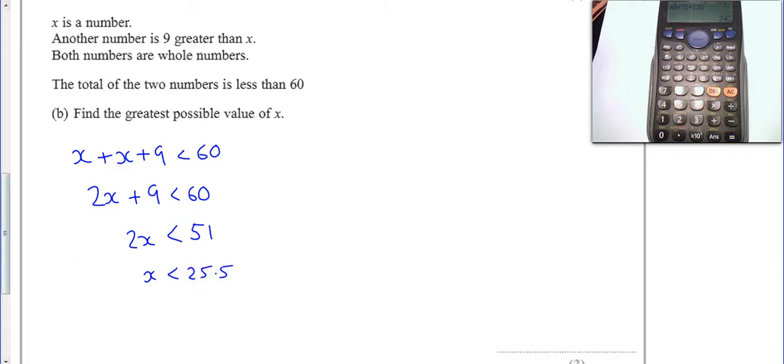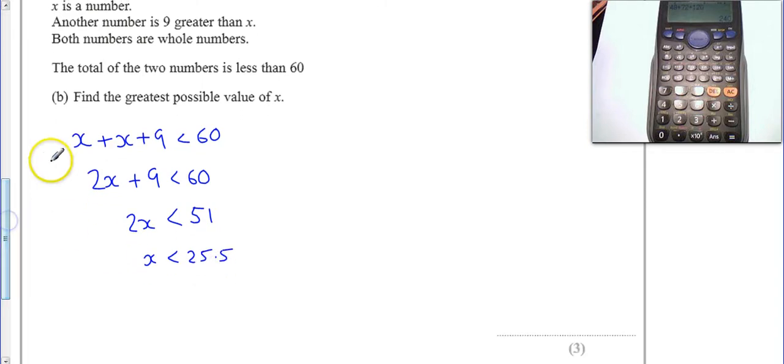We'll just go back to here. It says both numbers are whole numbers, they're integers. So x is going to be less than this, so the first integer less than that is the number 25.